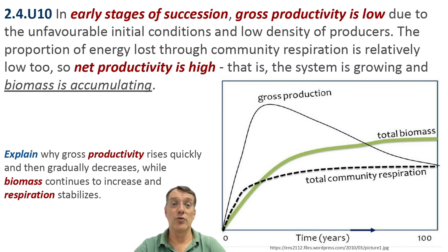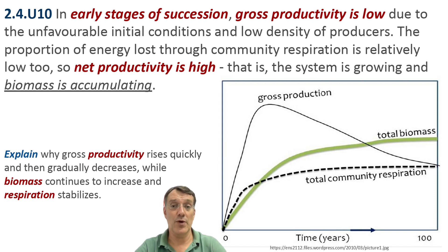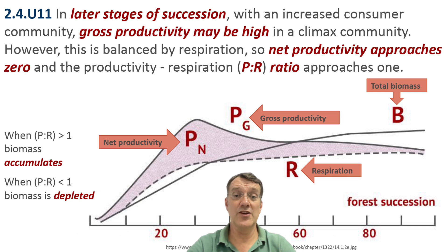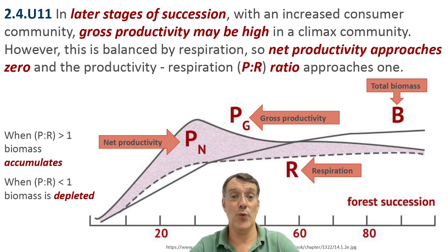In early stages of succession, gross productivity starts low due to unfavorable conditions and low density of producers. However, community respiration is also low, resulting in high net productivity as the system accumulates new biomass. The graph shows how gross production rises quickly, then gradually decreases while biomass continues to increase. In later succession stages, with an increased consumer community, gross productivity may remain high but is balanced by higher respiration rates. The P-to-R ratio approaches one, meaning net productivity approaches zero — the ecosystem is maintaining its biomass rather than accumulating more.